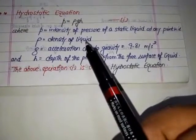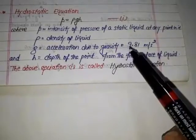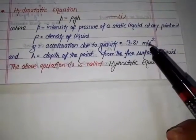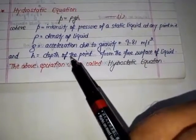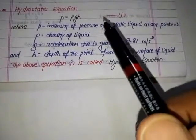Rho is the density of liquid and g is acceleration due to gravity that is equal to 9.81 meter per second square, and h equal to depth of point from free surface of the liquid, and this equation one is called hydrostatic equation.